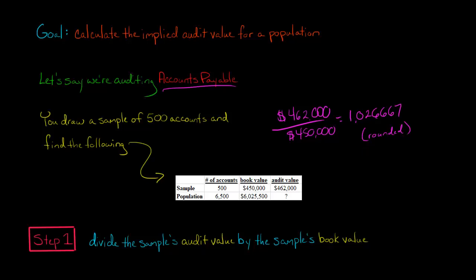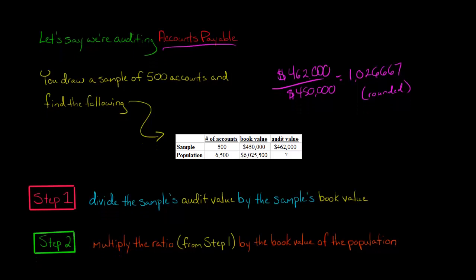So next, our next step is, now that we have that ratio, we're going to multiply that by the book value of the population. So here's our population, and here's our book value. So we're going to take this 6,025,500, and we're going to multiply it by our ratio.